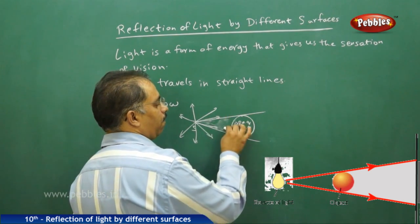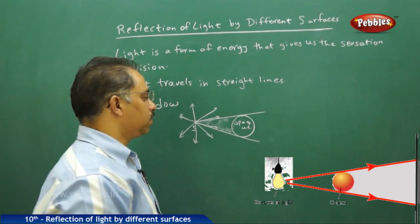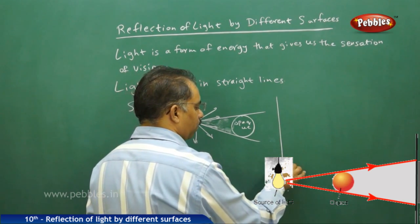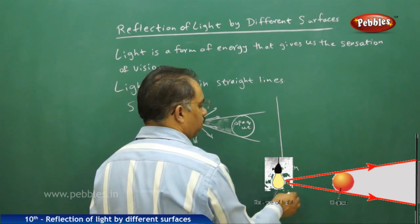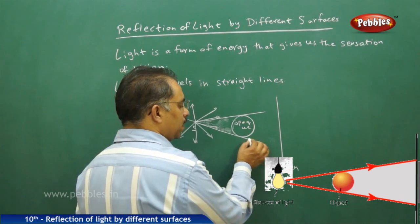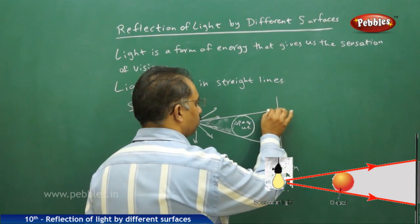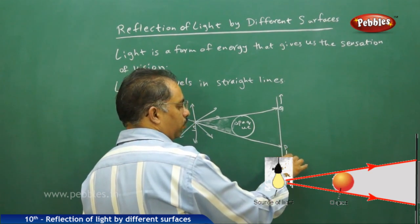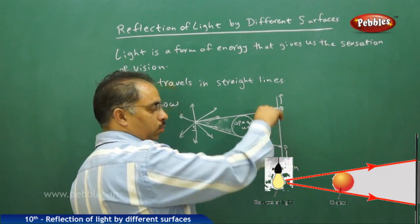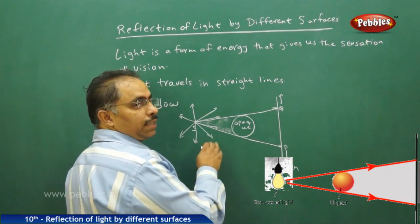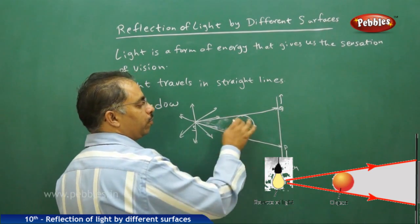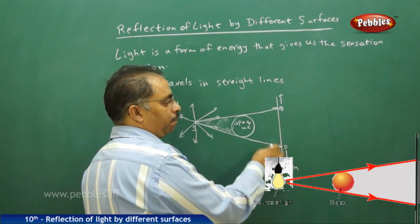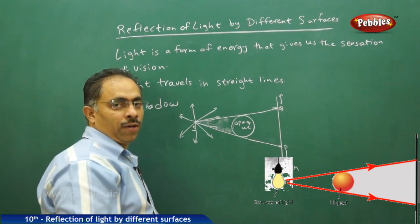This portion is light-lit, whereas the other portion is dark. If there is a screen, the light travels straight and beyond points P and Q we are able to see the light, but the light is obstructed in the region P to Q by the opaque object from the point source. So this region on the screen, P to Q, is nothing but the shadow of the opaque object.